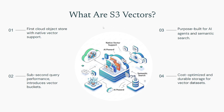So, what exactly is Amazon S3 Vectors? In simple terms, it's the first cloud object store to offer native capabilities for storing and querying vectors. Think of it as S3, but purpose-built for the unique demands of AI — specifically for tasks like AI agents, AI inference, and semantic search. It's designed to be incredibly cost-optimized and durable for those massive vector datasets that are becoming the backbone of so many AI applications.